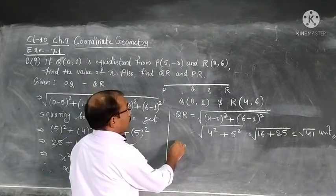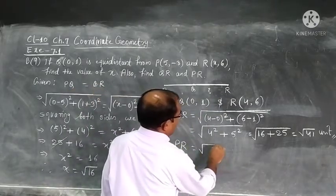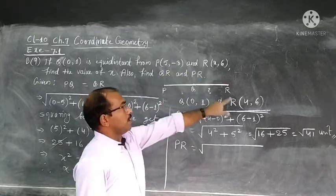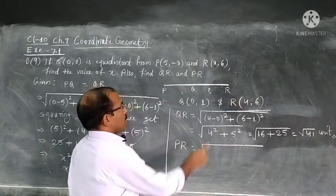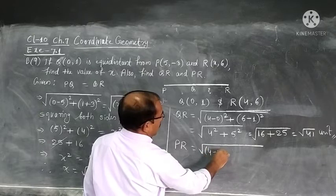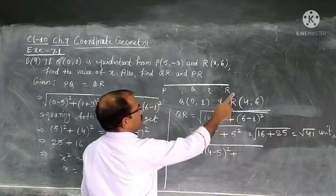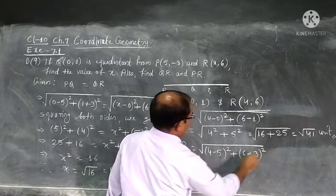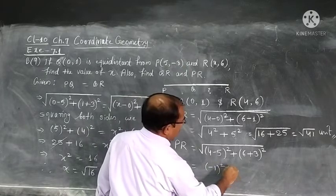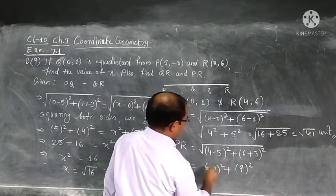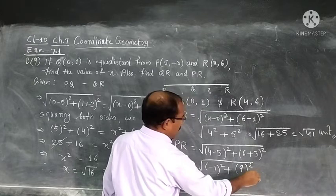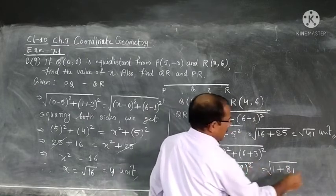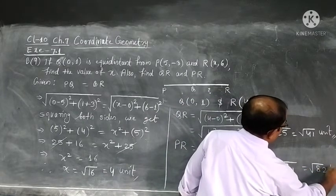And then PR, PR we will find out. We need which two points P and R. P is (5,-3), R is (4,6). So (4-5) x2 minus x1 then (6-minus plus 3) 6 plus 3 whole square. We will get here (-1)² and (6+3) 9², 6 plus 3, 1² will be 1, 9² will be 81. We will get root 82 units.